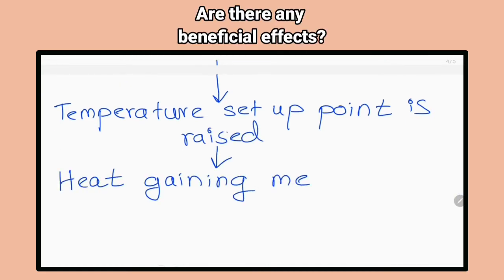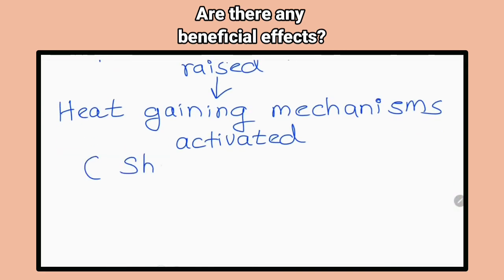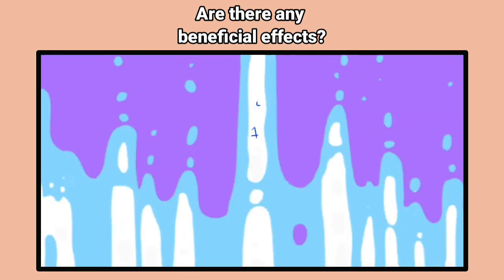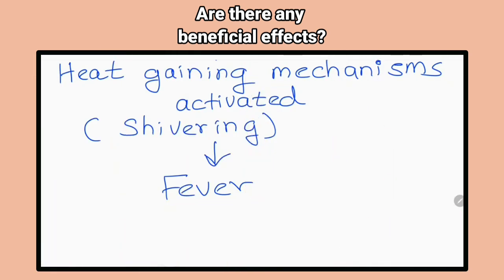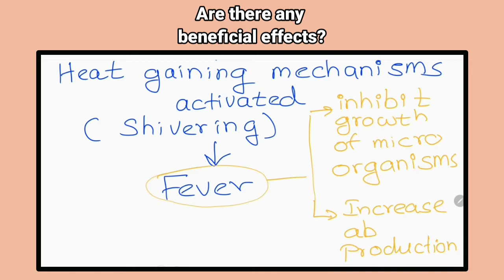Are there any beneficial effects of fever, or is it just a systemic response to pyrogens? It is assumed that there are some beneficial effects. When body temperature is elevated by fever, it can inhibit the growth of microorganisms. As it increases cellular metabolic rate, it speeds up defensive mechanisms and repairing processes.